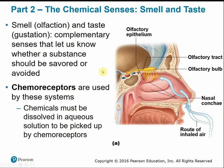Looking at the chemical senses of smell and taste — these are complementary senses that work hand in hand. They work together to let us know whether a substance should be savored or avoided. Both are considered chemoreceptors, meaning chemicals must be dissolved in an aqueous solution to be detected. The aqueous solution for smell is the mucus in the sinus cavity, and for taste it is saliva.